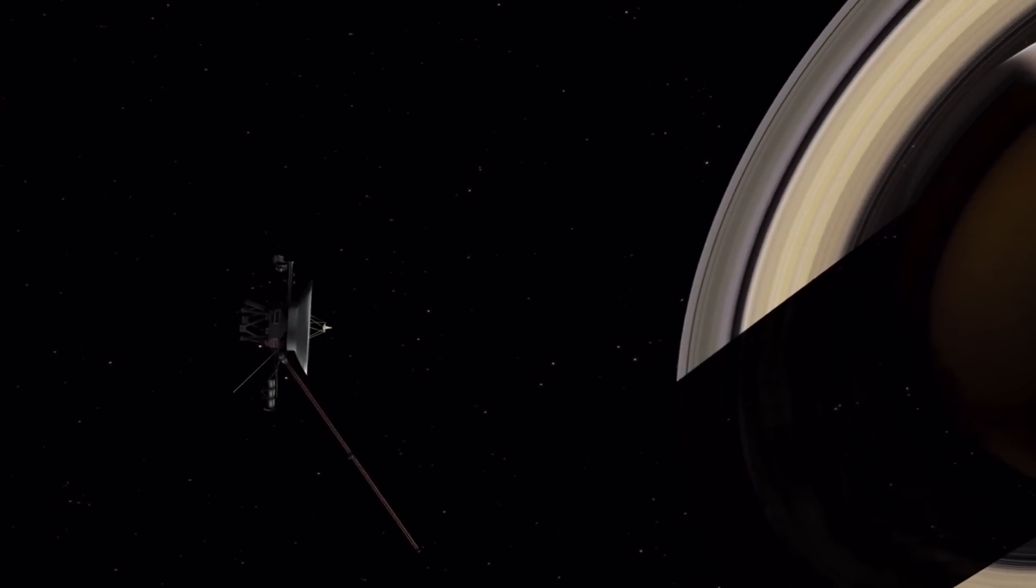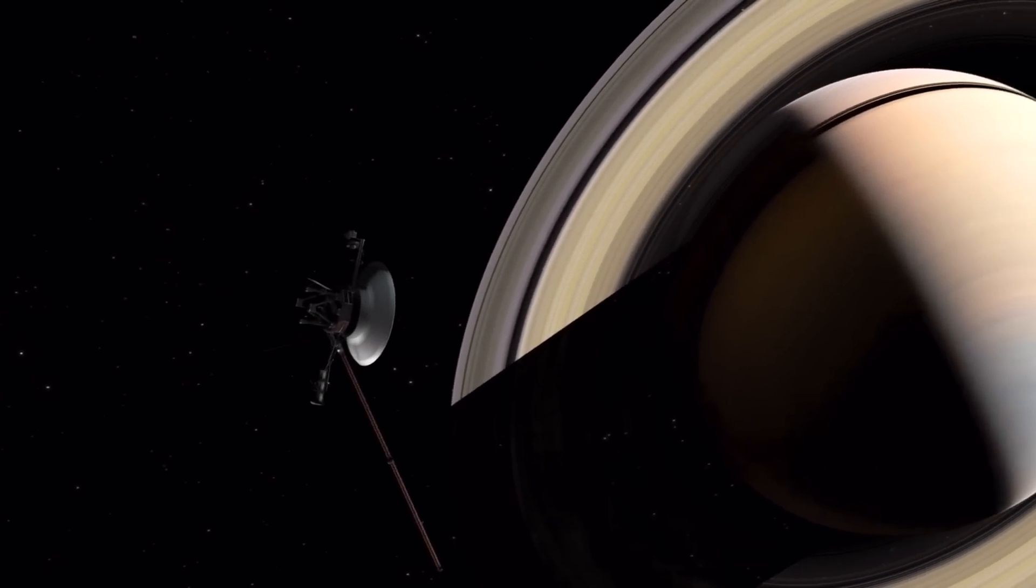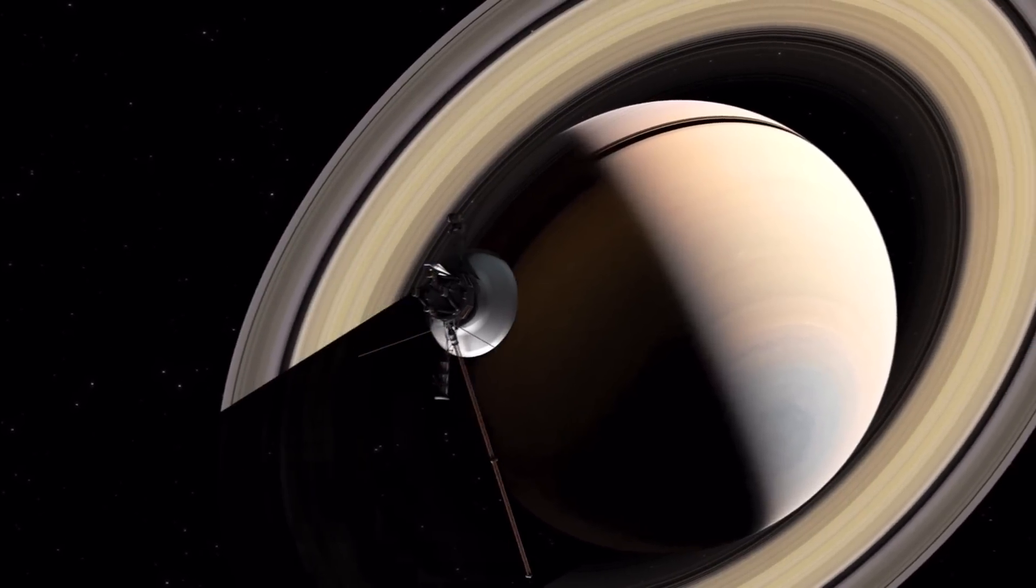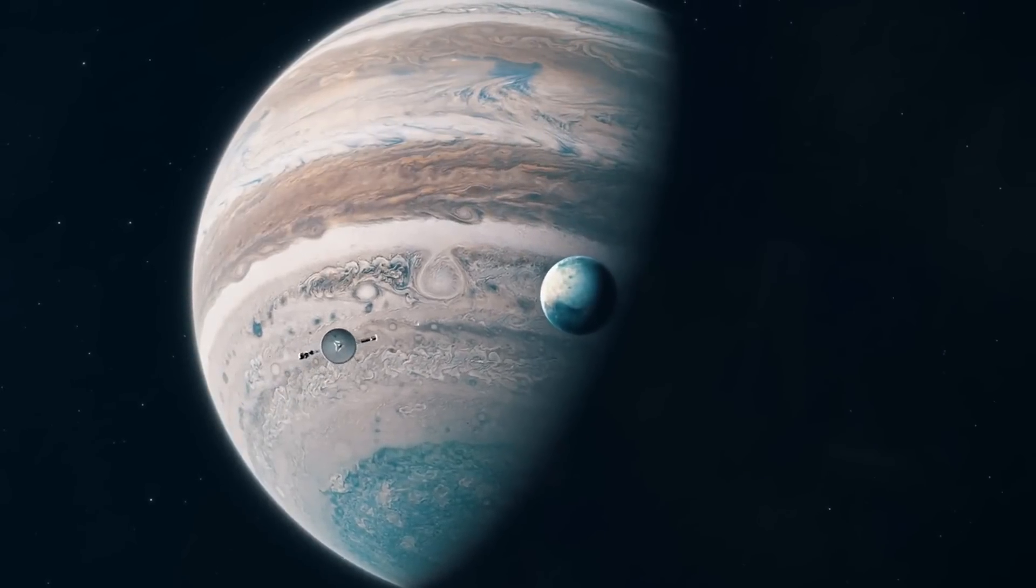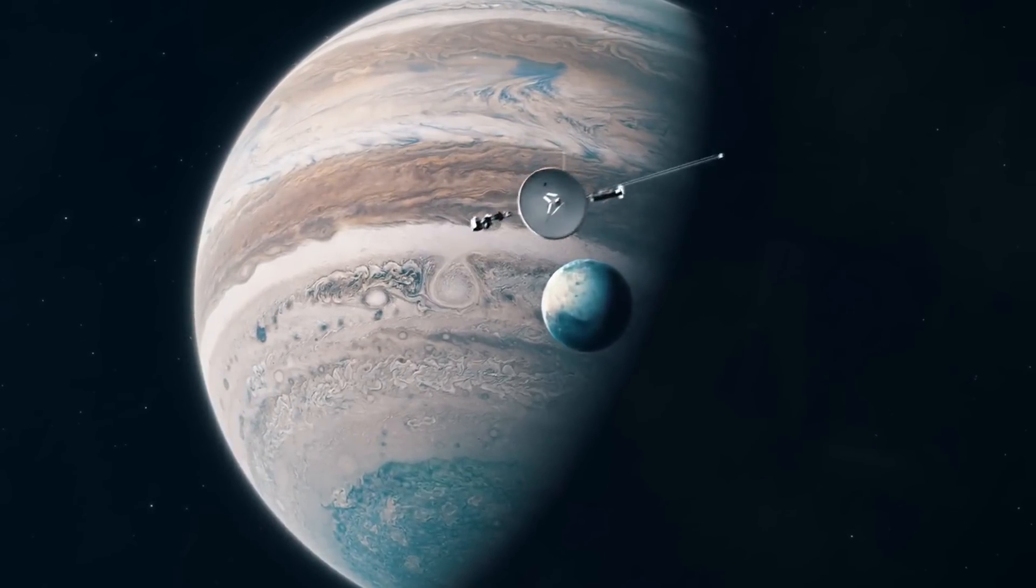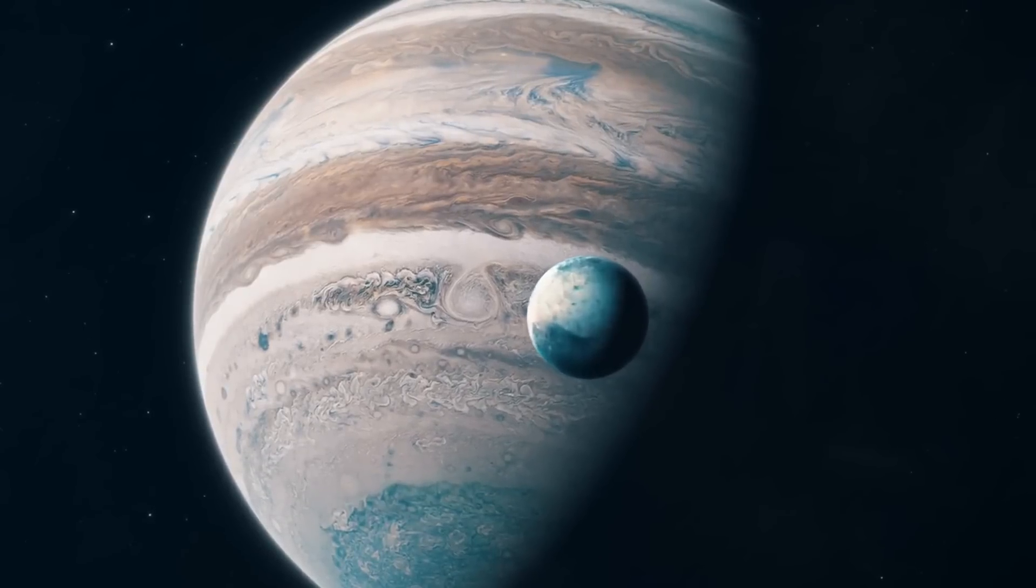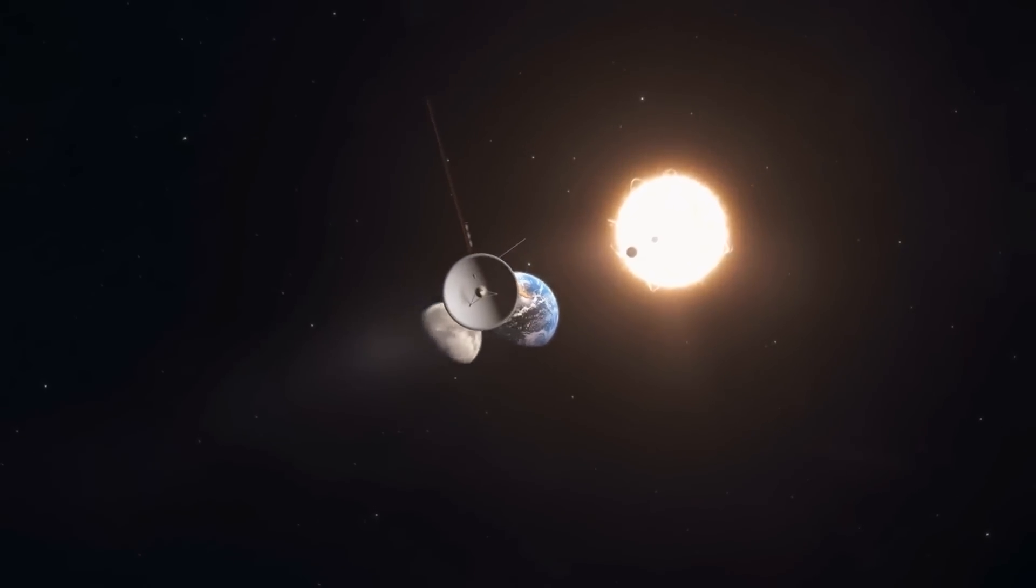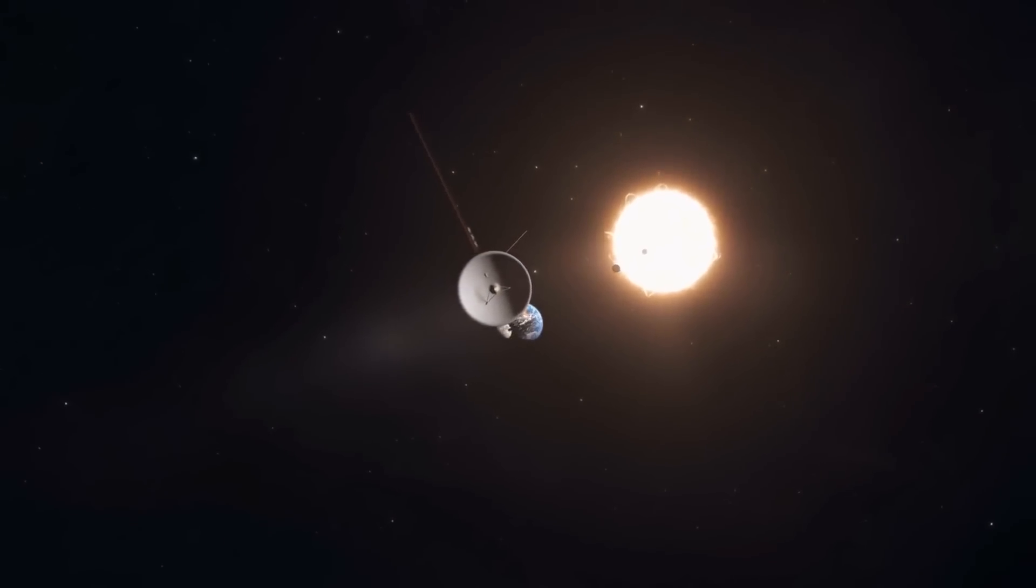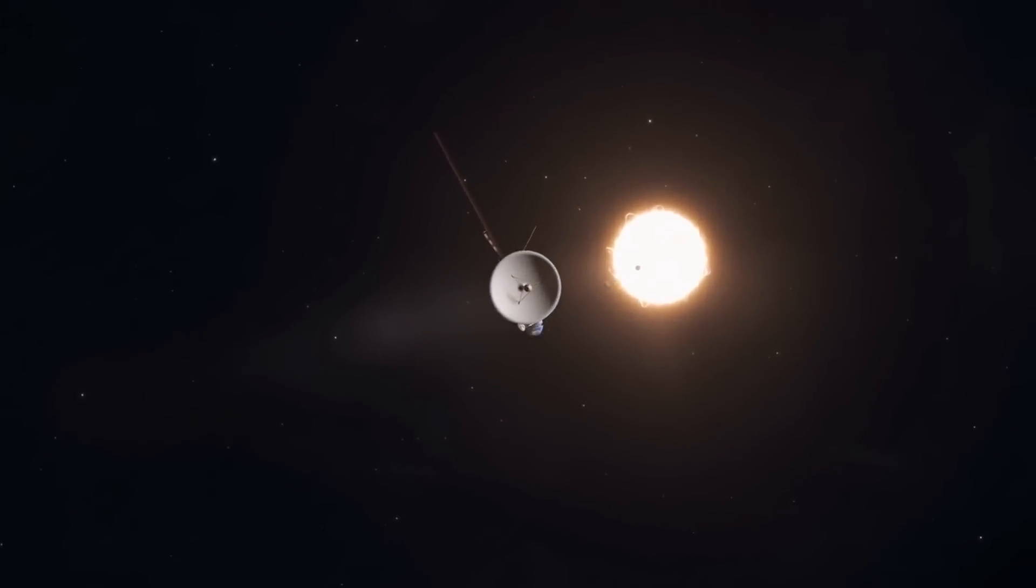Initially, Voyager 1's primary mission was to study the gas giants Jupiter and Saturn and their moons. It was part of NASA's Grand Tour of the Outer Planets, a plan that capitalized on a rare planetary alignment that occurs only once every 176 years. This alignment allowed the spacecraft to use the gravitational pull of the planets to slingshot its way through the solar system, reducing the time and energy required to reach these distant worlds.